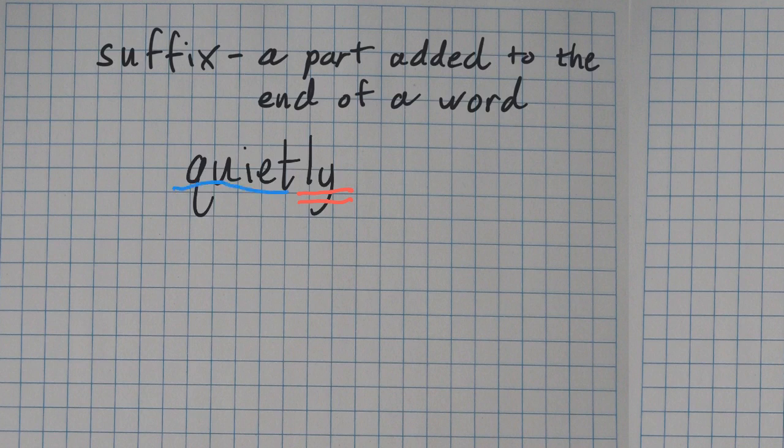And do you remember what we call this part? The quiet part would be called either the base word or the root word. So the main word is quiet and -ly is the suffix.